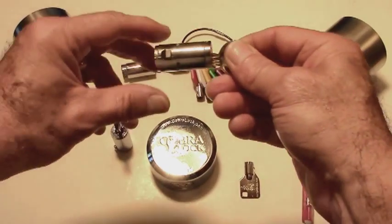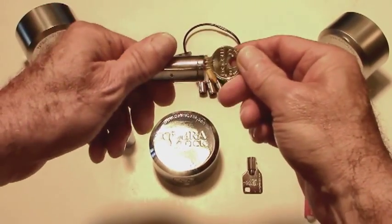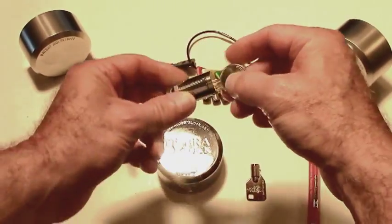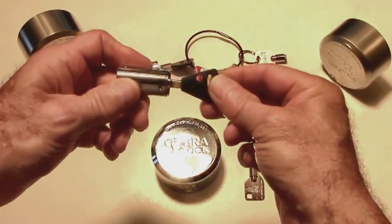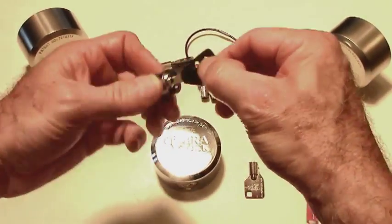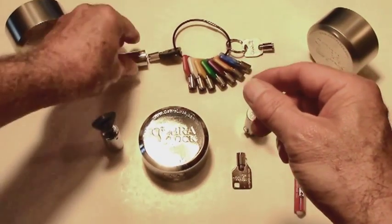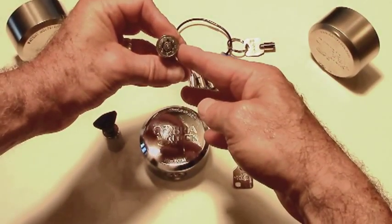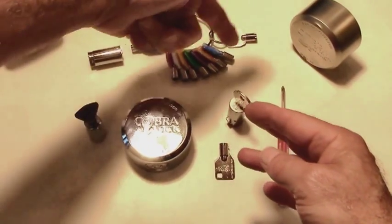Here we have the Medeco standard vending lock. This is the Abloy standard vending lock, and this is the Cobramatic 7 standard vending lock. The Cobramatic 7 uses eight user changeable keys.